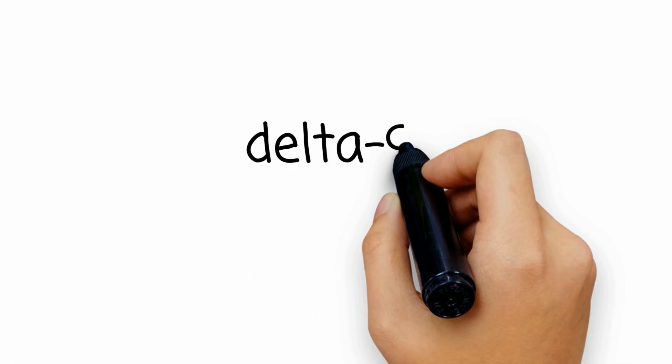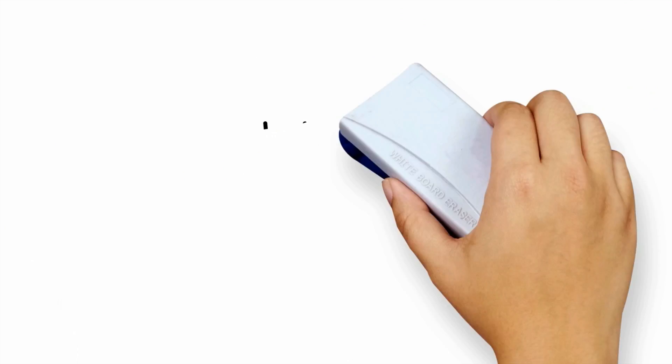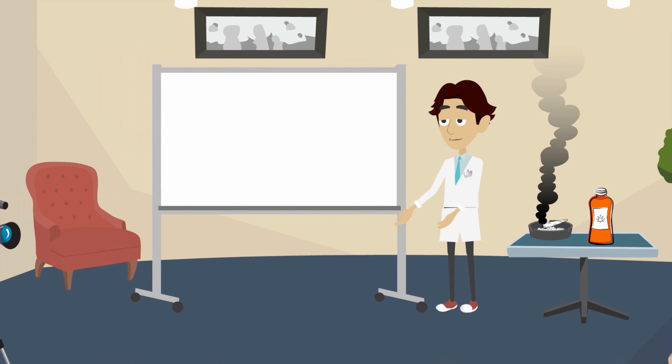The main active ingredient in cannabis is delta-9-tetrahydrocannabinol, but don't worry, we'll just call it THC. It's the main part that makes you high. The amount of THC is different from plant to plant, and we think THC in plants is much stronger than a few decades ago. OK, so that's the basics. Got it?